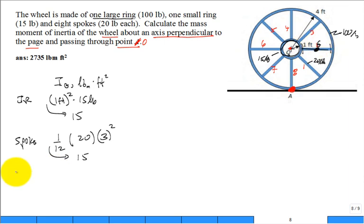Now, the ring, the outer ring, is the distance of four foot squared times that mass of that large outer ring, which is 100 pounds, and so that gives me 1,600.